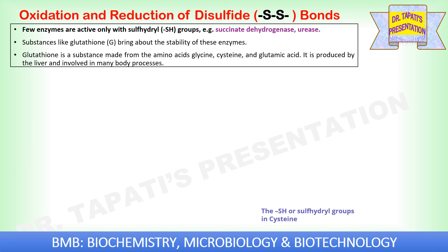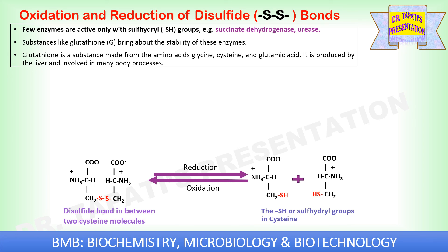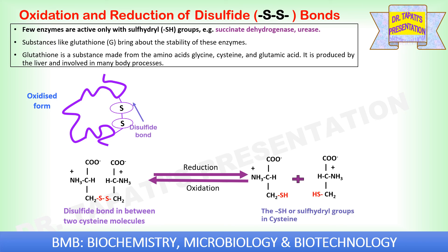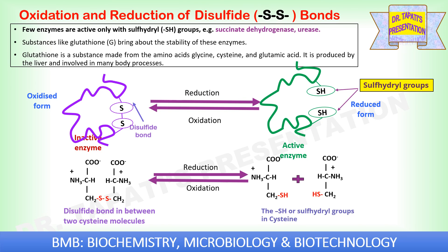Enzymes can also be activated by oxidation and reduction of disulfide bonds. Sulfhydryl (–SH) groups are present in the R group of cysteine amino acids. When two cysteine molecules are in close proximity, the sulfhydryl groups oxidize to form a disulfide bond. Disulfide bonds modulate protein stability and conformational dynamics. Some enzymes — such as succinate dehydrogenase and urease — are active only with sulfhydryl groups, stabilized by substances like glutathione. In these cases, the reduced form is the active enzyme, while the oxidized, disulfide-bonded form is inactive.